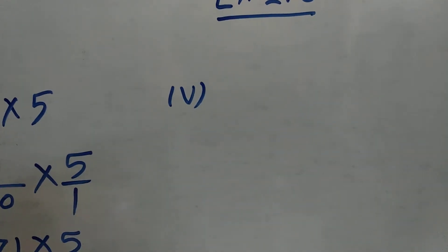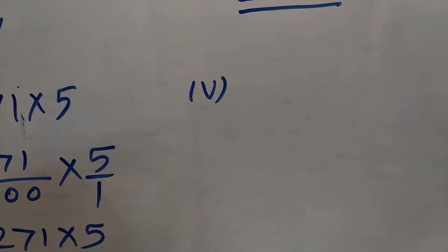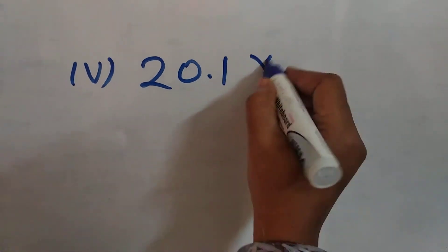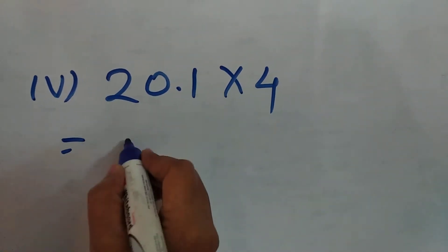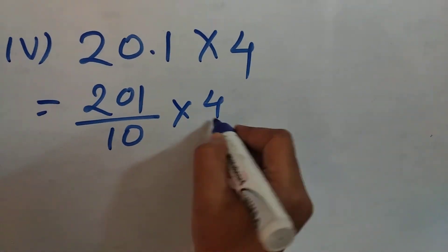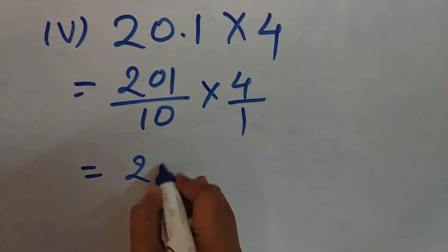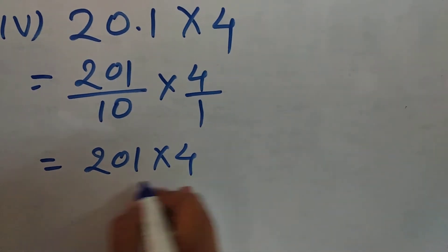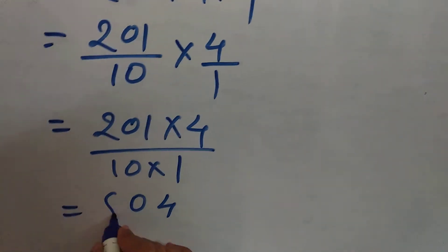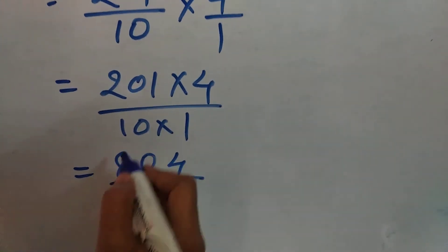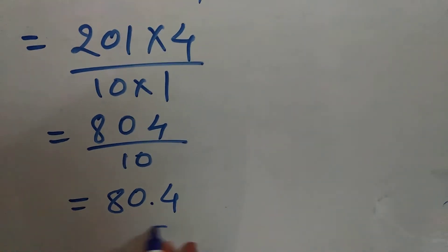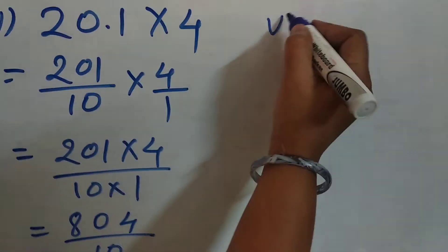Now the fourth sum: 20.1 multiplied by 4. Convert this into a fraction and then carry out the multiplication. Convert back to decimal — 80.4 is the answer.